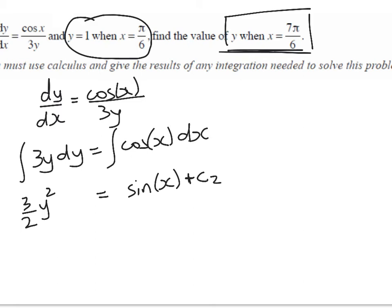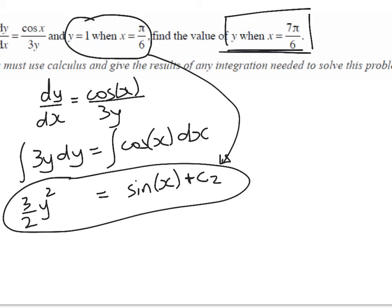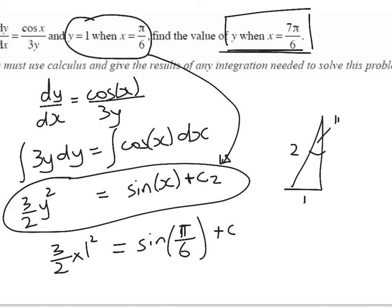So what have I got now? Well, I've got enough information with this that I can substitute in this information here. We know that when x is pi on 6, y is 1. So 3 over 2 times 1 squared is equal to sine of pi on 6 plus c. So sine of pi on 6 is pi on 6, 30 degrees, is just 1 half. So what does that give us? Well, 3 over 2 is equal to 1 half plus c. So c equals 1. I'm going to take a new slide to finish this one off.